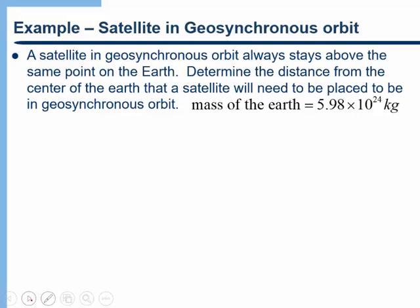A satellite in geosynchronous orbit always stays above the same point on the earth. Determine the distance from the center of the earth that a satellite will need to be placed to be in geosynchronous orbit.